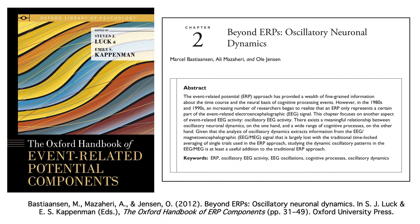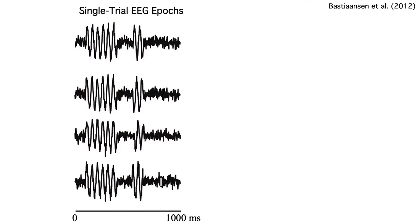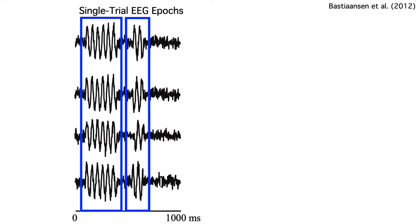If you'd like to learn about the relationship between EEG oscillations and ERPs, there's a chapter in the Oxford Handbook of ERP Components. We're looking at four single-trial EEG epochs following a stimulus. These are simulated data, and the neural response is unrealistically large relative to the noise so that we can see what's going on. On each trial, the stimulus elicits two alpha-band bursts.